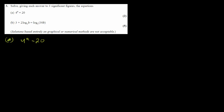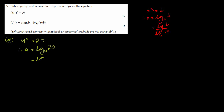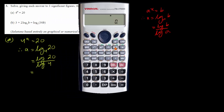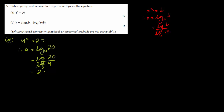Question three is on logarithms. The first part: 4^a = 20. Using the rule that if a^x = b then x = log_a(b), we get a = log base 4 of 20. Changing to common logarithm: a = log20 / log4. Using the calculator, that turns out to be 2.16 to three significant figures.